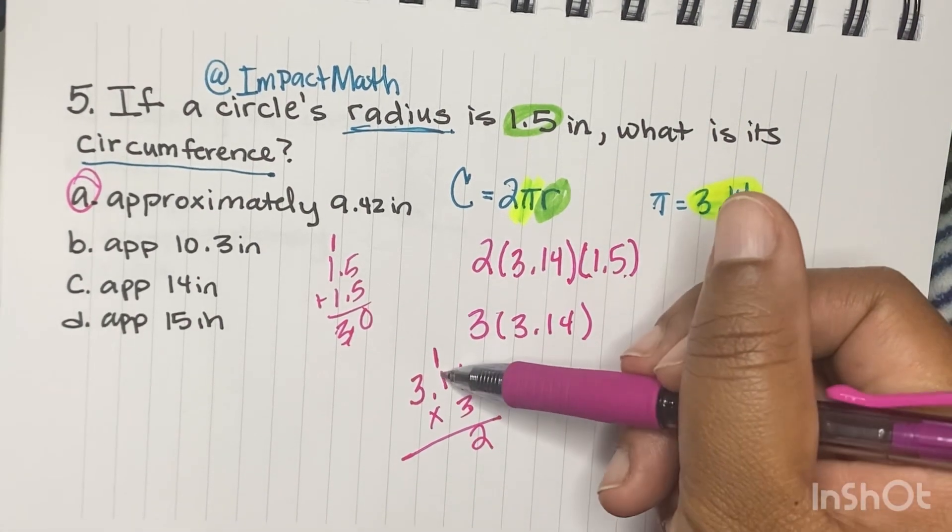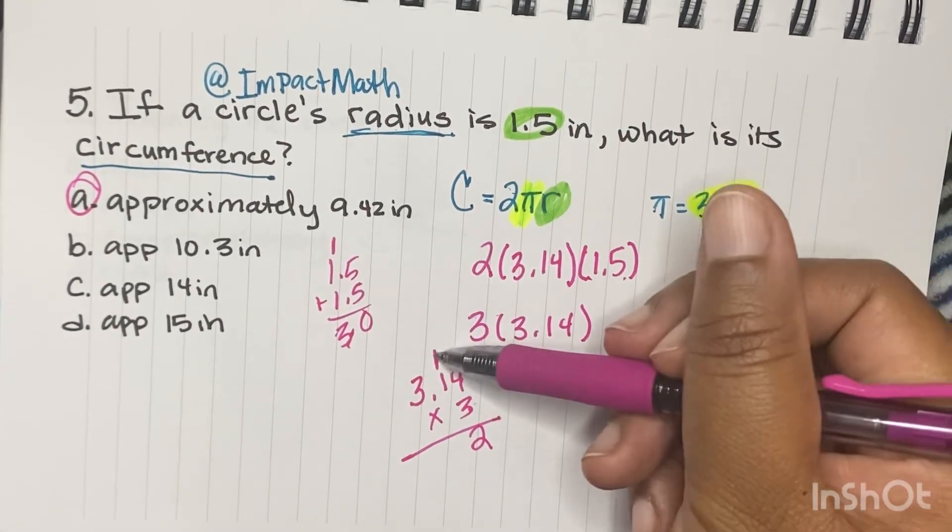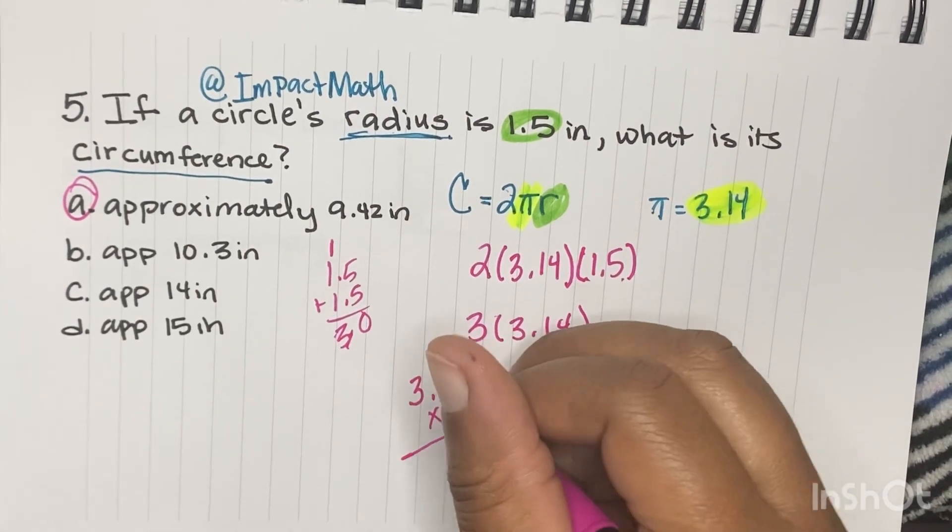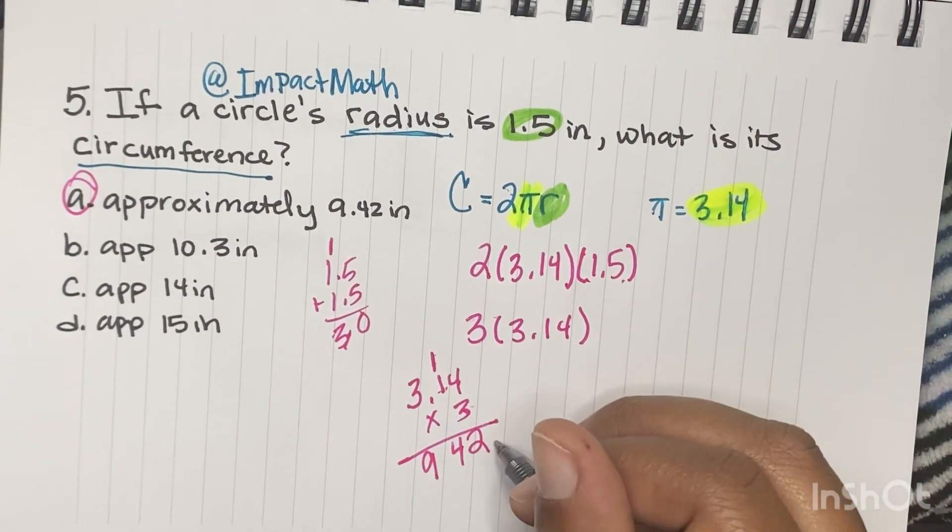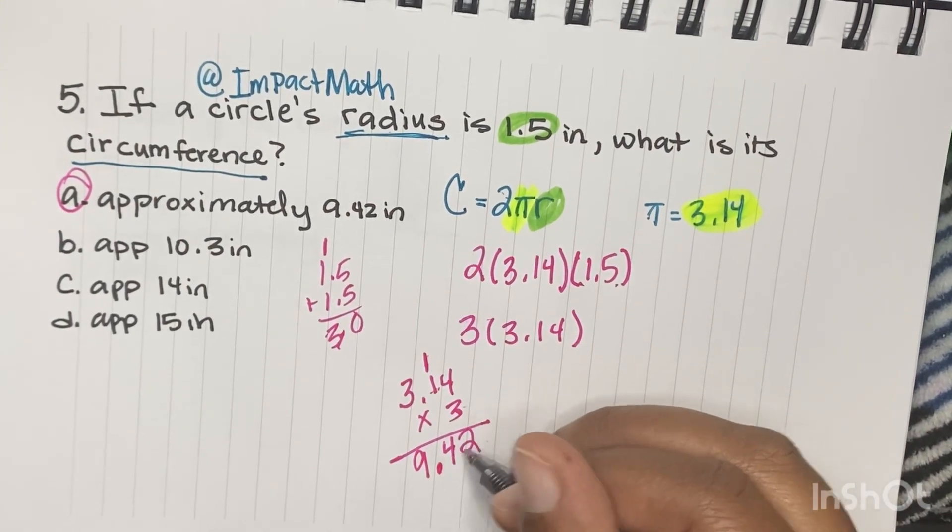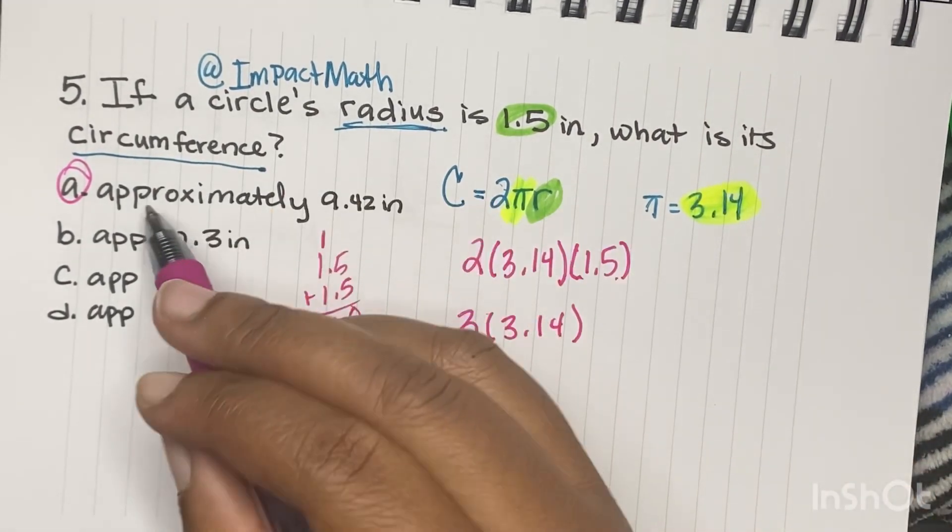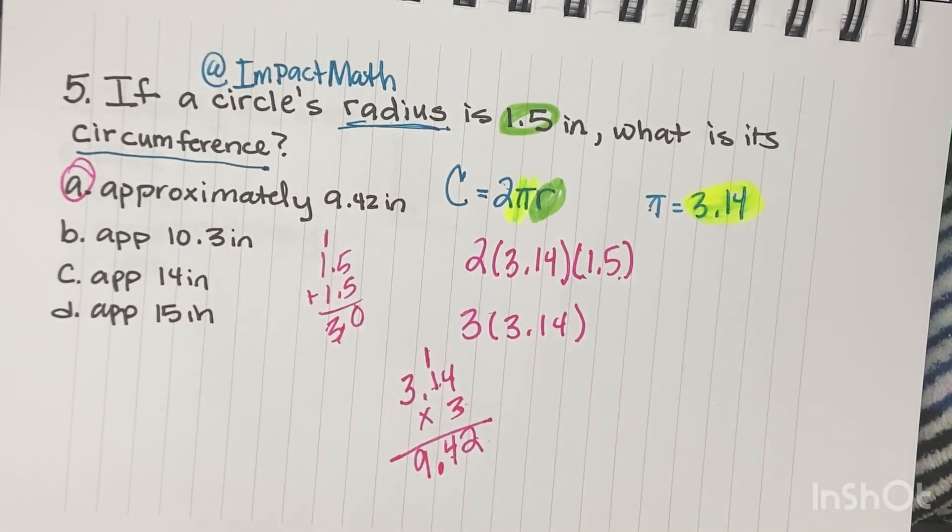So 3 times 1 is 3 plus 1 is 4, and then 3 times 3 is 9. And since we have two places after the decimal, we move our decimal two digits. And so that's why it's approximately 9.42 inches.